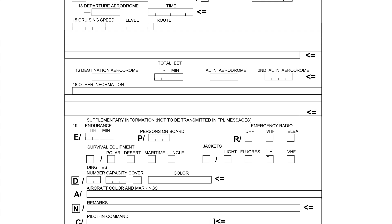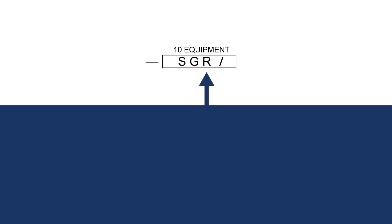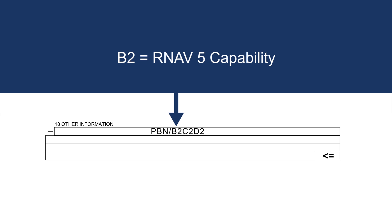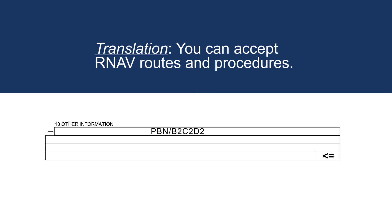There's one more information box related to the ICAO flight plan: the Other Information Box, Box 18. If you previously listed your flight as PBN-capable in Box 10 with the letter R, that only notified ATC that your equipment is PBN-approved. Since PBN describes many different types of equipment, you must specify what you're equipped with in Box 18. Most piston-powered GA aircraft will include the code PBN/B2 C2 D2 in Box 18. The B denotes RNAV-5 capability, C denotes RNAV-2 capability, and D denotes RNAV-1 capability. By listing this code, you are telling ATC that you are capable of handling RNAV-based procedures for the enroute structure and terminal procedures.